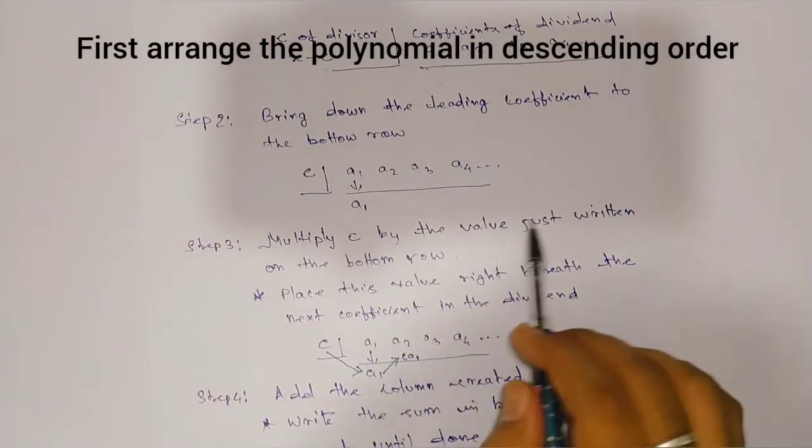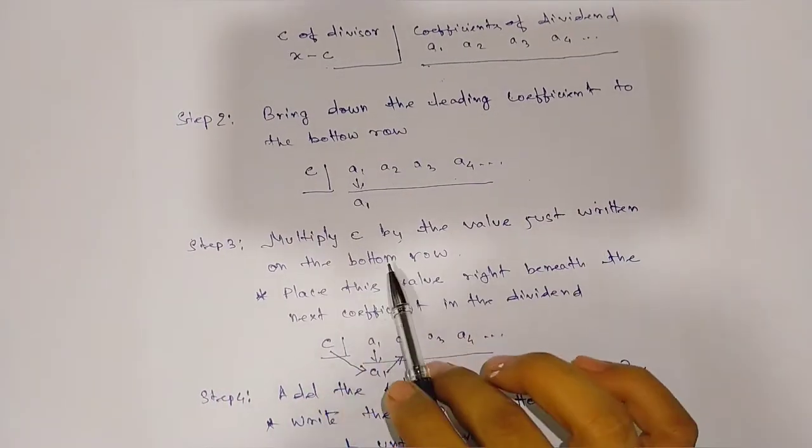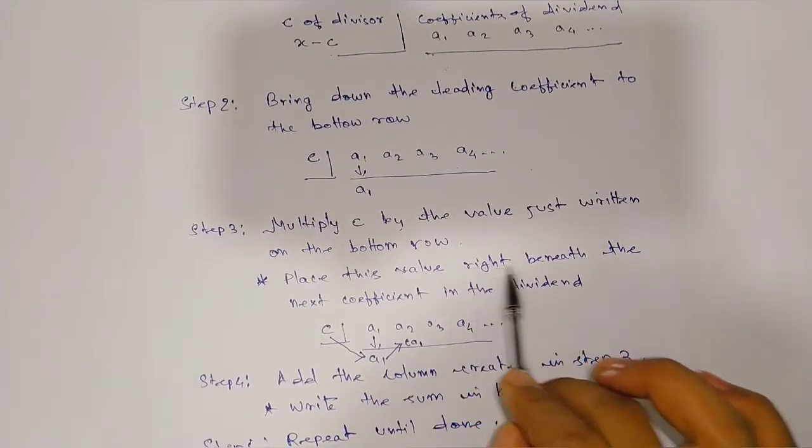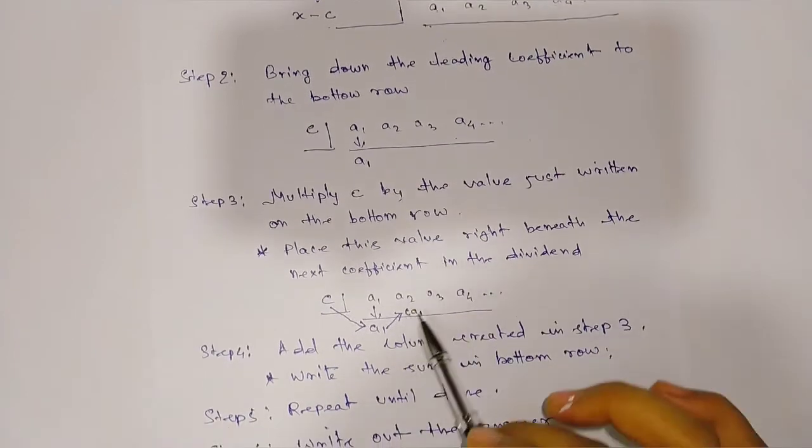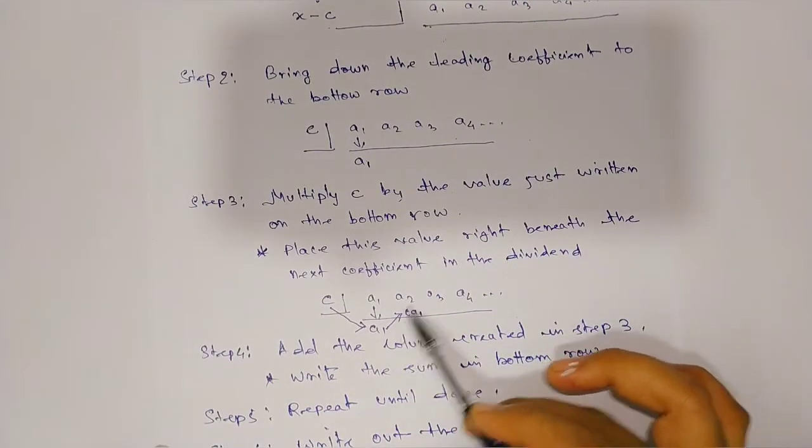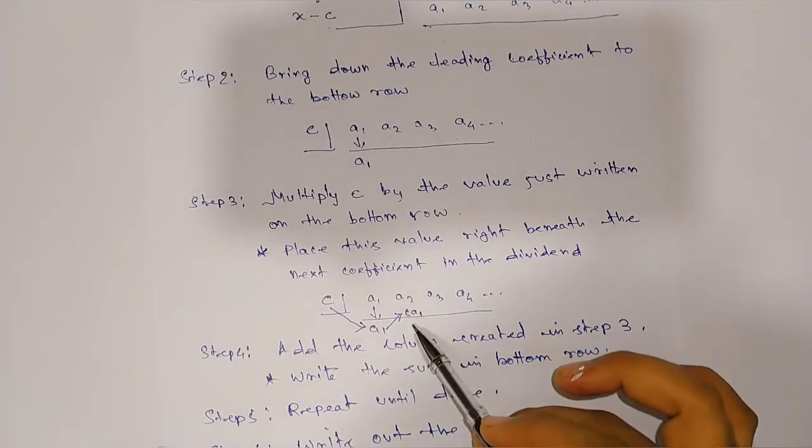Place this value right beneath the next coefficient in the dividend. Now add these values without changing the sign.